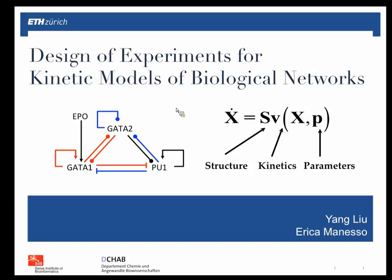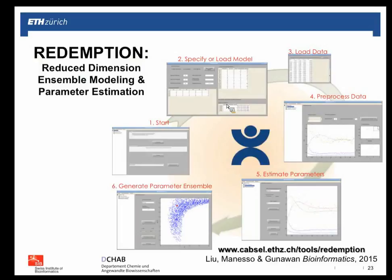As a case study, we consider the myeloid progenitor cell differentiation gene regulatory network. We'll account for uncertainty in both structure and parameters simultaneously through ensemble modeling. For parametric uncertainty, we have a tool called REDEMPTION — Reduced Dimension Ensemble Modeling and Parameter Estimation — available on our website, written in MATLAB. It provides a user interface for entering stoichiometry matrices, parameter bounds, and initial conditions.